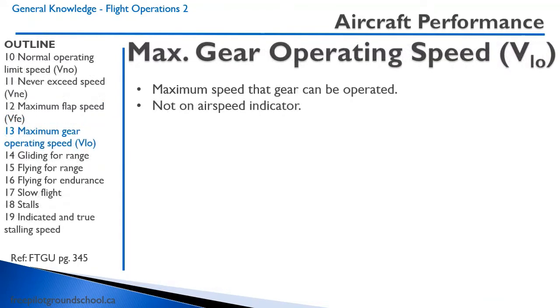We also have a maximum gear operating speed, VLO — the maximum speed at which the gear can be extended or retracted. This speed is not shown on the airspeed indicator.